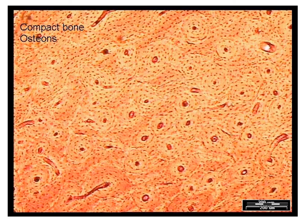At low magnification, bone shows multiple sets of rings around blood vessels. All the tiny dark spots are osteocytes — mature bone cells trapped in the calcium salt matrix. We'll discuss osteoblasts, osteoclasts, and osteocytes in more detail in the bone chapter.